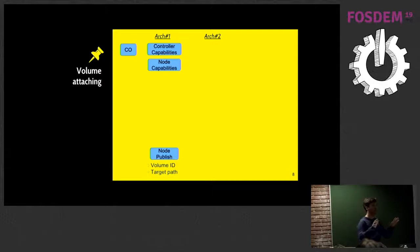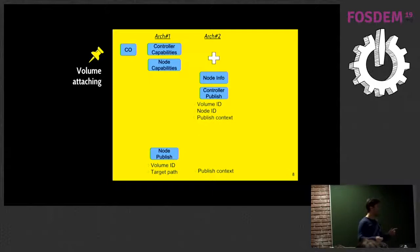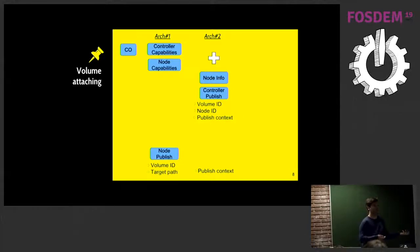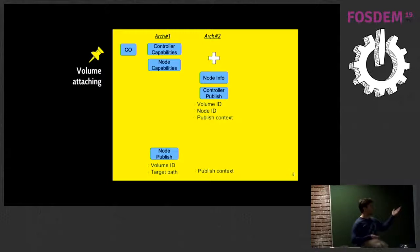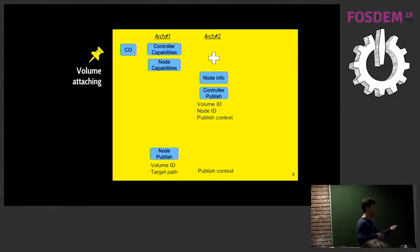But what about Architecture 2, where we had split the functionality between the manager and the nodes? Now we have additional functions. You call the controller capabilities first and find you need to call the controller. The controller doesn't know where it's going to be publishing the volume, so you first query the node where you're going to place the container, get the information, and with the node ID you call the controller and tell it: please publish this volume to this specific node. For example, if you're publishing an iSCSI volume, this is where you would be exporting and mapping the volume to the specific node with the initiator name and IP address. And then from the controller, you call node publish to make the final connection.